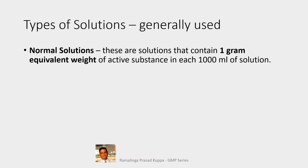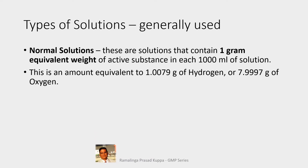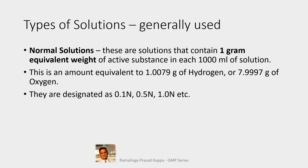Molecular weight divided by the valency gives the equivalent weight. This is an amount equivalent to 1.0079 grams of hydrogen or 7.9997 grams of oxygen — another way of expressing equivalent weight. Normal solutions are designated as 0.1N, 0.5N, 1N, etc.